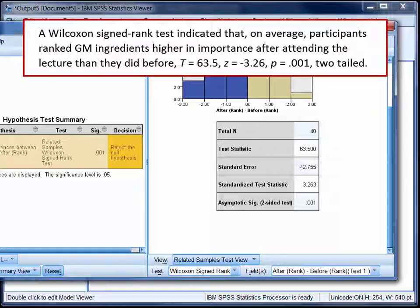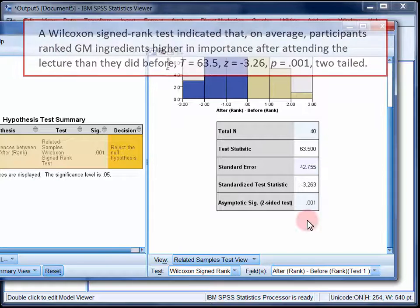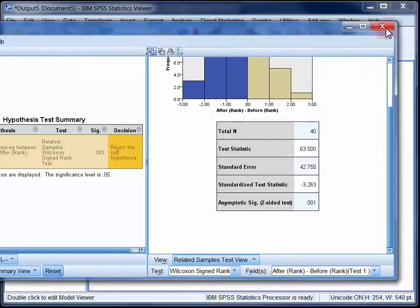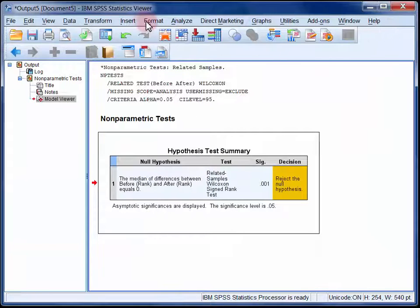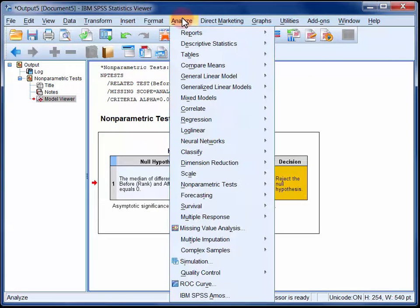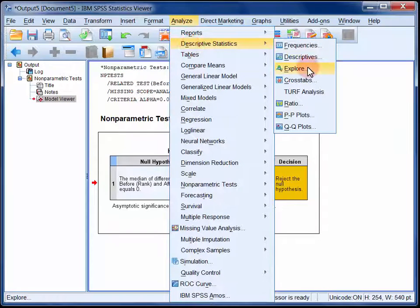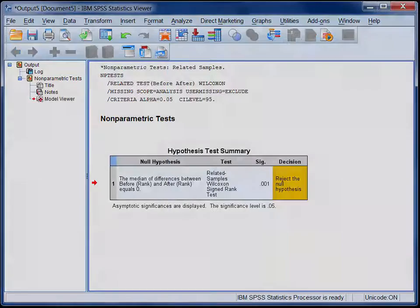You should also indicate the number of positive and negative differences, and the number of ties somewhere, in addition to the median rank for both sets of scores. Those median ranks can be derived from the explore option under descriptive statistics in the analyse menu, which is here. And finally, you should report an effect size, and information about how to do this is provided in StatHand.